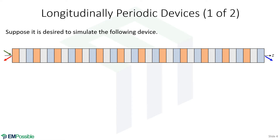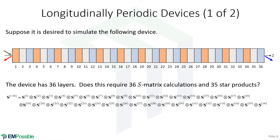Consider a device we wish to simulate that has something like 36 layers, and we would like to find transmission and reflection from it. Given what we know, we can count 36 layers, set up a loop going one layer at a time, calculate a scattering matrix, update a global scattering matrix, and combine everything to get one overall scattering matrix describing all 36 unit cells.